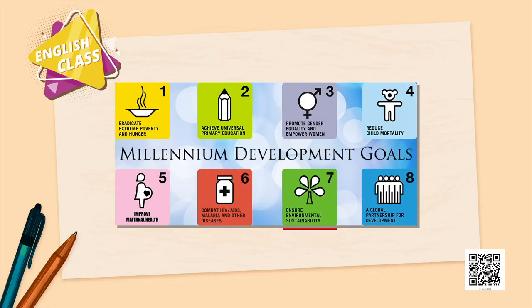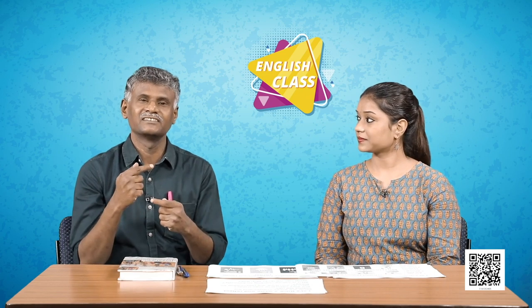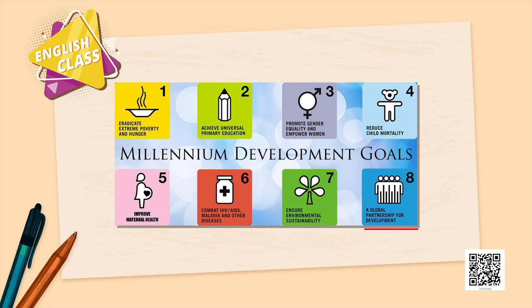Number 7: ensure environmental sustainability — this is directly related to what Nani Palkhivala wanted us to do: protect the environment, reduce plastic use. Number 8: a global partnership for development — one country, one person, or one institution cannot work alone in isolation to protect the environment. Institutions, individuals, and countries have to come together. Let us think about how we can sustain this earth, sustain humanity, sustain industries, institutions, and languages.